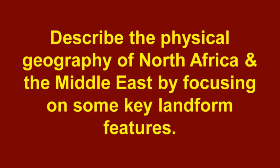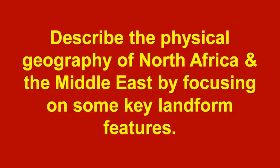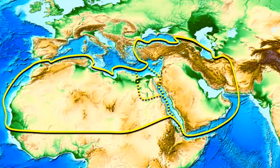In this video I'm going to describe the physical geography of North Africa and the Middle East by focusing on key landform features created via plate tectonics. Here we have a physical relief map of the region. The dashed yellow line separates North Africa to the west from the Middle East to the east. Egypt is kind of in-between — some say it's part of the Middle East, some say it's North Africa.